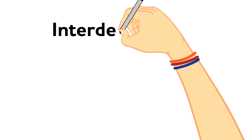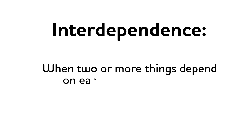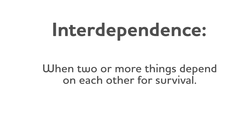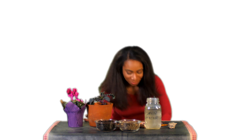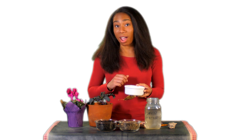One last ecosystem term I want to discuss is interdependence. Interdependence is when two or more things depend on each other for survival. My favorite example of interdependence in our garden is the relationship between healthy soil and worms. Healthy soil and worms both depend on each other to survive.